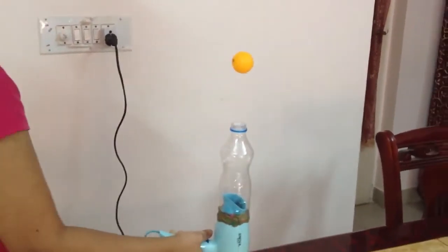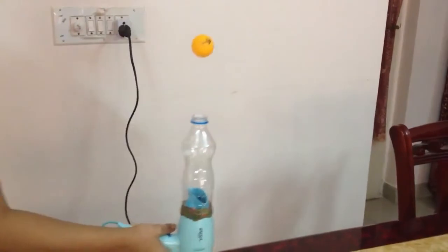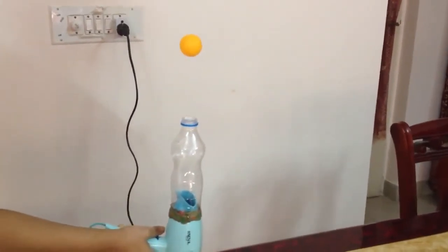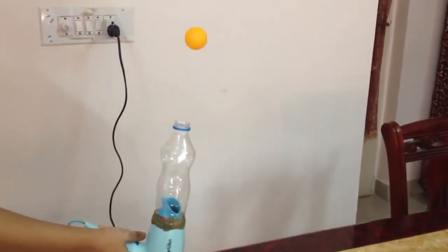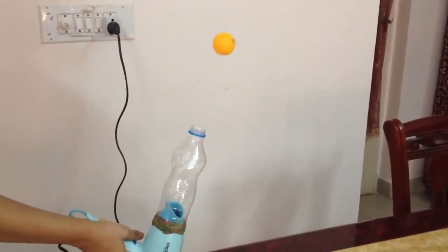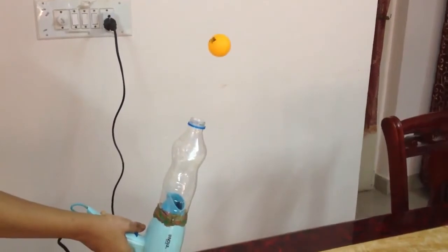We move the hair dryer side to side, the ball doesn't fall. Even if we tilt the hair dryer at an angle, the ball doesn't fall.